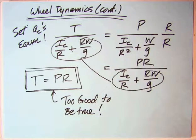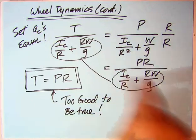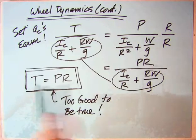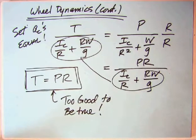And I sort of said, well, can we compare these? Well, I multiplied R over R and got the two denominators equal, and then of course you can cancel those and came up with the wonderful result that the torque T was equal to P times R.